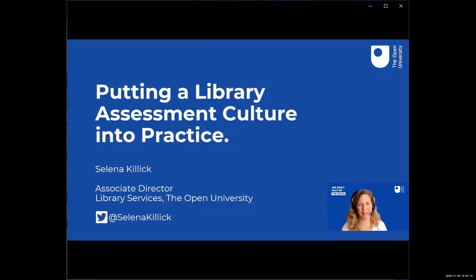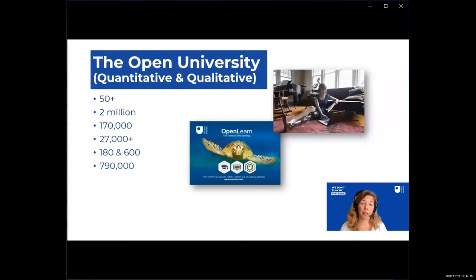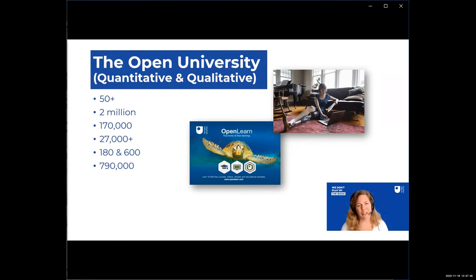The Open University is the UK's largest higher education provider, formed over 50 years ago with a mission to open up education for everybody. We've had over 2 million people choose to study with us. Currently about 170,000 students, predominantly in the UK and Ireland, study online — that's always been our model. As my vice chancellor put it, we were the world's first online university waiting for the World Wide Web to be invented. 27,000 of our students have declared a disability, making us the largest provider of higher education for people with disabilities — accessibility of information and learning is business critical.